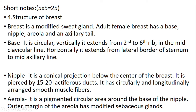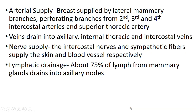The nipple is a conical projection below the center of the breast. It is pierced by 15 to 30 lactiferous ducts with circularly and longitudinally arranged smooth muscle fibers. Areola: it is a pigmented circular area around the base of the nipple. The tubercles of the areola are modified sebaceous glands. Arterial supply: breast is supplied by lateral mammary branches, perforating branches from 2nd, 3rd and 4th intercostal arteries, and superior thoracic artery. Veins drain into the axillary, internal thoracic and intercostal veins. Nerve supply: the intercostal nerves and sympathetic fibers supply the skin and blood vessels respectively. Lymphatic drainage: about 75% of lymphatics from the mammary gland drain into the axillary nodes.